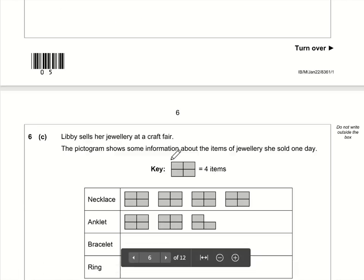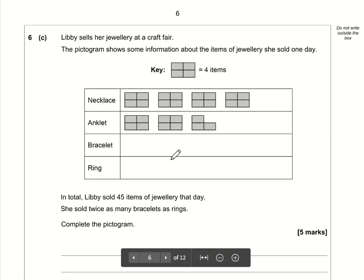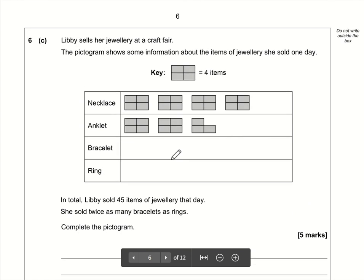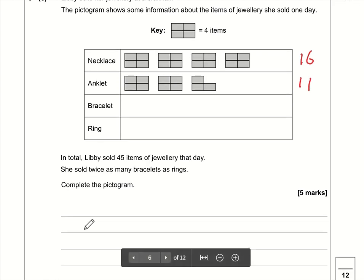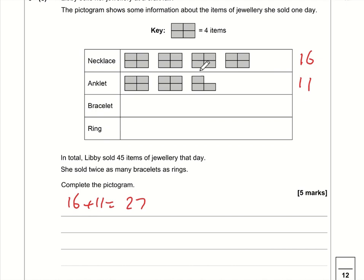So this is probably the hardest question of this paper in my opinion. So we know that this symbol here represents 4 items. So 4, 8, 12, so 16 necklaces. 4, 8. So if this is 4, then each individual rectangle represents 1 item. So 4, 8, 9, 10, 11. So far, what have we got? We've got 16 plus 11, and 16 plus 11 is 27.